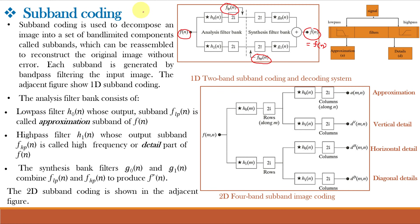Coming back to subband coding or subband decomposition: the general procedure of splitting the energy of a signal into several frequency bands is known as subband decomposition. If we use Wavelet Transform to decompose a signal or image, this is called Wavelet decomposition, and we can reconstruct the original image using the inverse Wavelet Transform. We use a low pass filter H0(N) to obtain the approximation subband and a high pass filter H1(N) to obtain the detailed subband. Since our image is two-dimensional, we apply low pass and high pass filtering with down sampling to obtain approximation, vertical, horizontal and diagonal details.